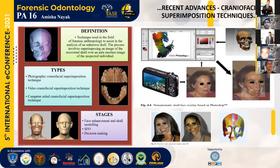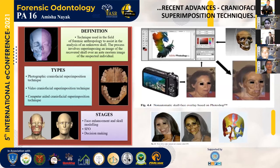Recent advances include the craniofacial superimposition technique, used in forensic anthropology to assist analysis of an unknown skull. The process involves superimposing an image of a recovered skull over the antemortem image of the suspected individual. Types include photographic, video, and computer-aided craniofacial superimposition. The stages include face enhancement and skull modeling, skull-face overlay (SFO), and decision making.